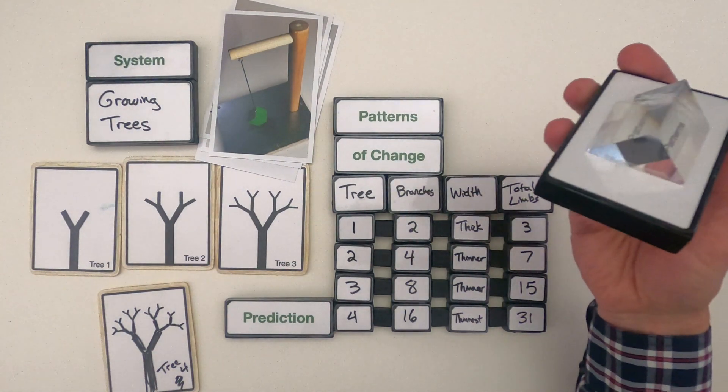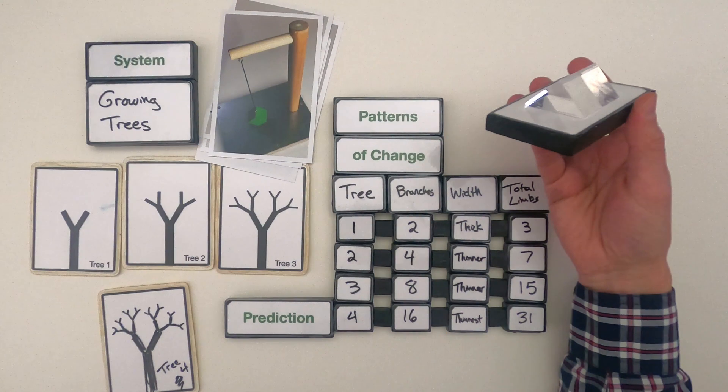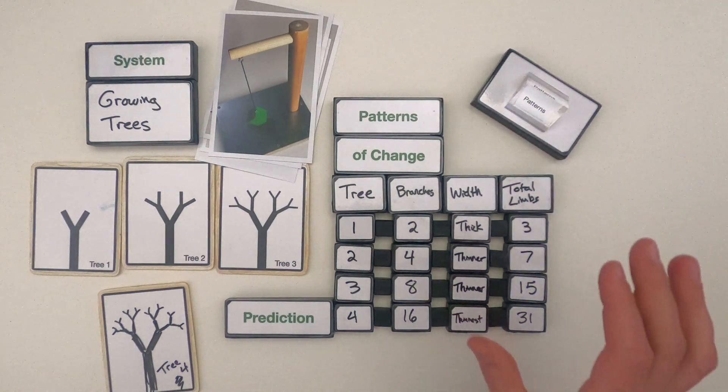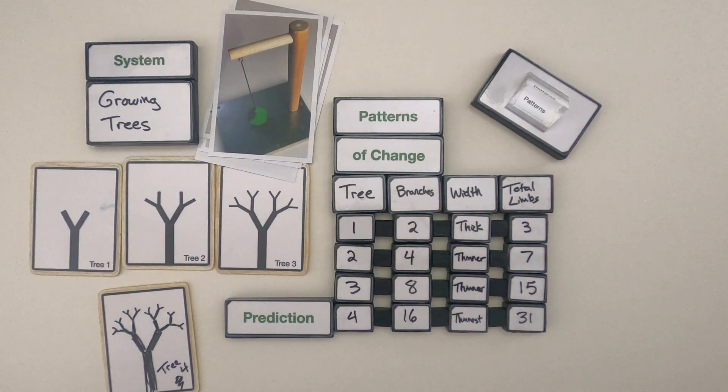Remember, we're always looking for that change in systems. It tells us more about the systems and also what's going to happen in the future. So that's patterns level two, patterns of change, and I hope that was helpful.